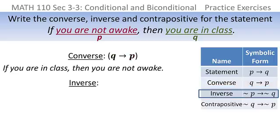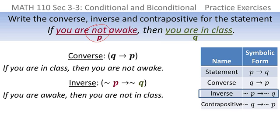The inverse negates the P and the Q, and the P already has a not in it, so when you negate that, it will essentially remove the not. So the inverse would be negating the P and negating the Q, which would be: if you are awake, then you are not in class.